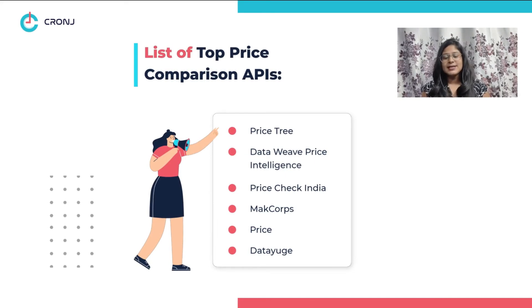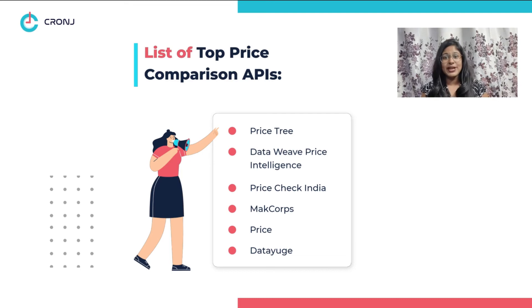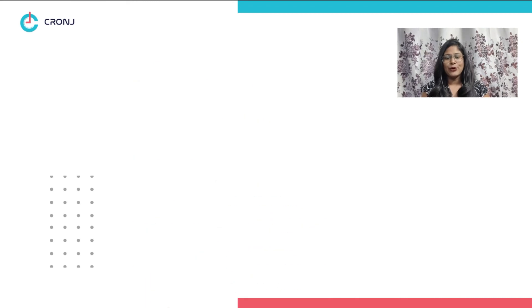However, some come for free while others are premium. In this list of top price comparison APIs, we have Price Stream, Data Weave, Right Intelligence, Price Check India, Mac Corpse Price, Data Use, and more.